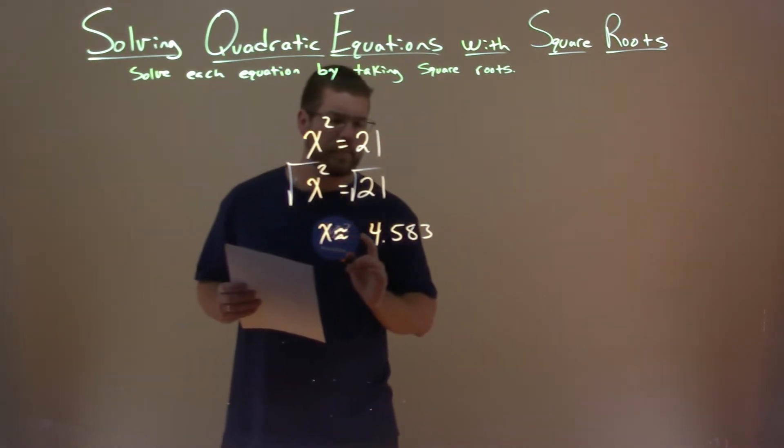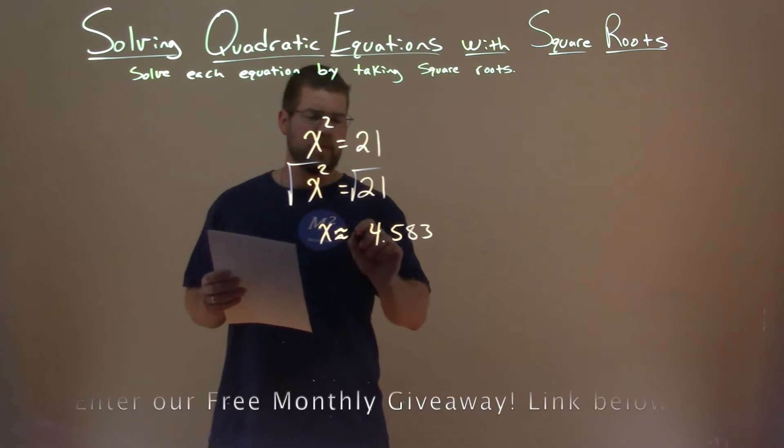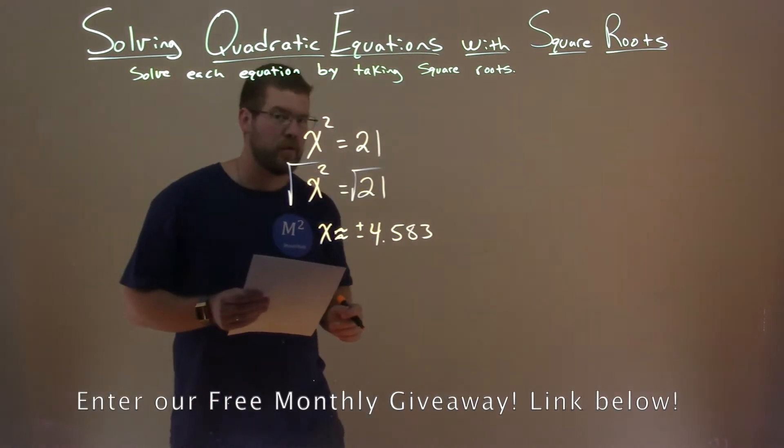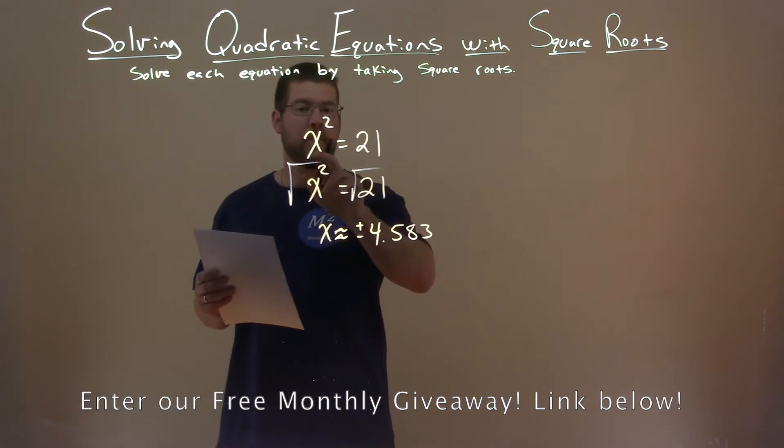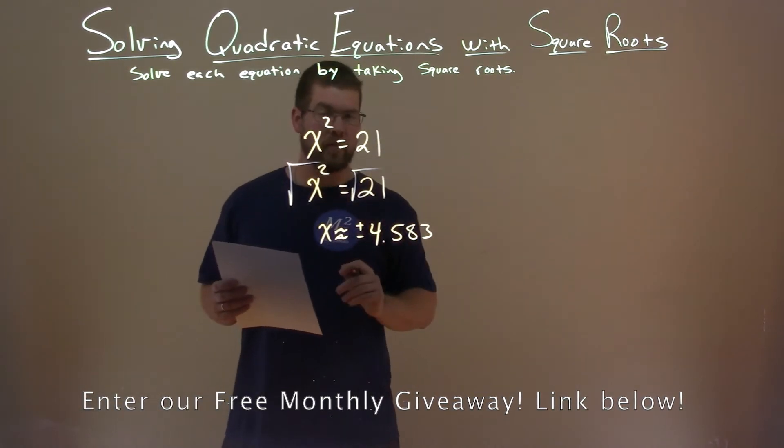But I'm not done. When we take the square root, we have to make this as plus or minus. There's two options there. There's two options for x that, when plugged in,